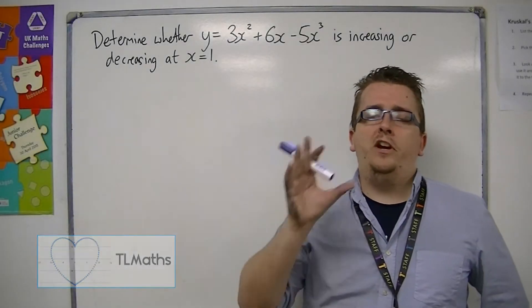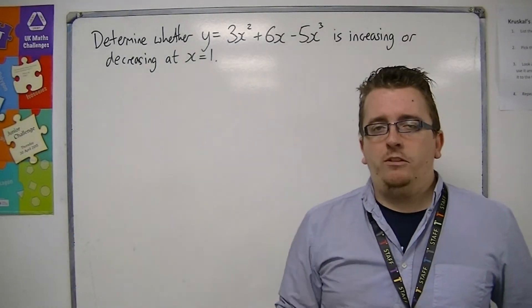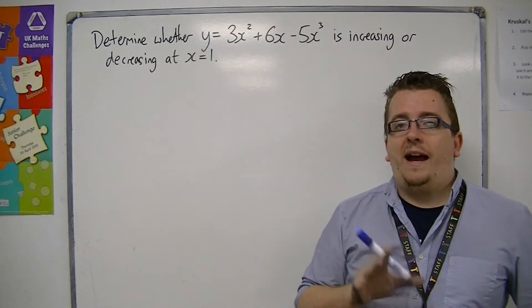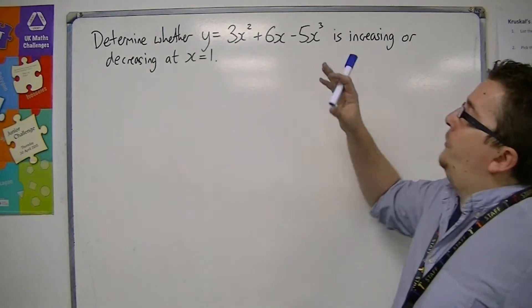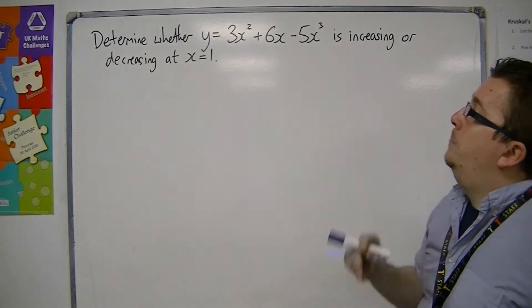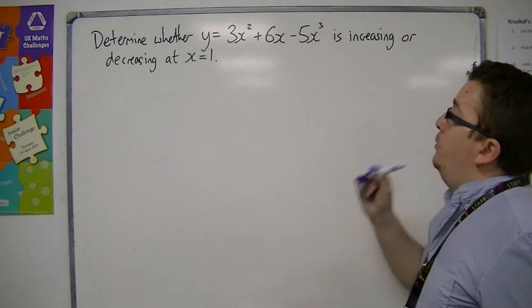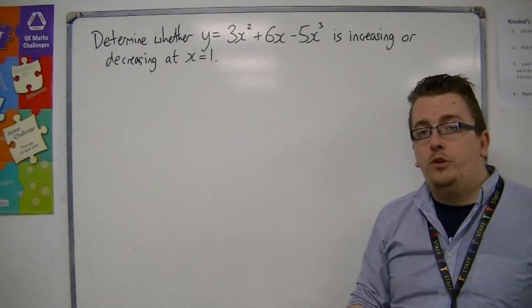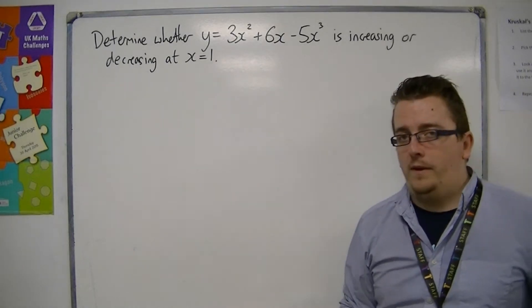Let's say we wanted to determine whether a curve was increasing or decreasing at a particular point. So we're starting off with this curve, y equals 3x squared plus 6x minus 5x cubed. And we want to find whether it's increasing or decreasing at x equals 1.